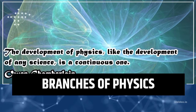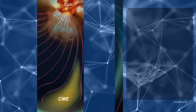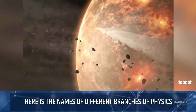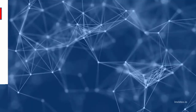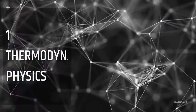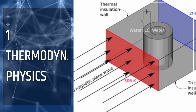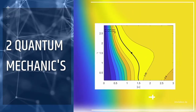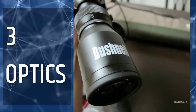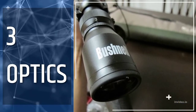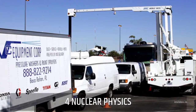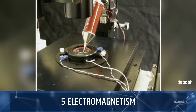Branches of physics. Here are the names of different branches of physics. One: thermodynamics. Two: quantum mechanics. Three: optics. Four: nuclear physics. Five: electromagnetism.